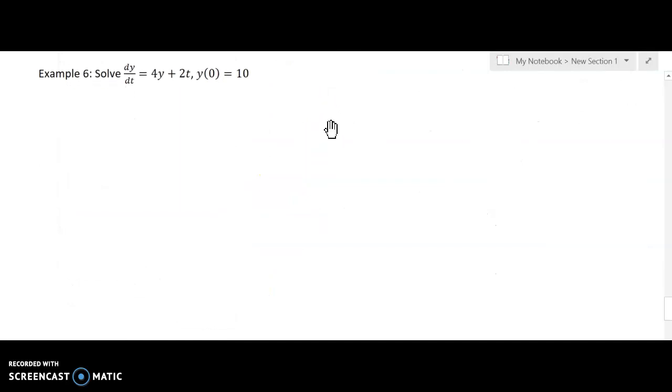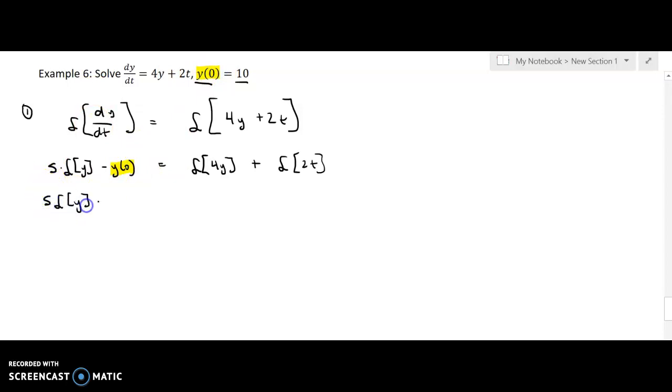All right, so here's another example. Solve dy dt equals 4y plus 2t with the initial condition 0, 10. Okay, so our first step, step one is to take the Laplace of both sides. So I'm going to take the Laplace of the left equals the Laplace of the right. So from our sheet number 35, I know that this is going to be s times the Laplace of y minus y of 0. And I know that here I have a sum, so I can apply the Laplace operator to each term separately for y plus the Laplace of 2t. And now I have some constants that I can factor out. And I also noticed that my y of 0 is 10. So since y of 0 is 10, here I have y of 0. So I can write s Laplace of y minus 10 equals 4 times the Laplace of y plus 2 times the Laplace of t.